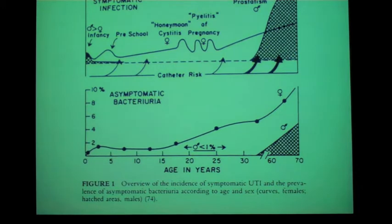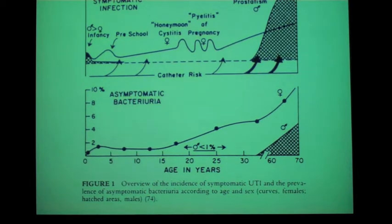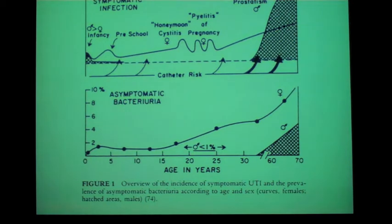You can map the risk of UTI over one's lifetime. Early in life, boys have more UTIs than girls, but they're high in both genders. Then it becomes predominantly a problem for females. Girls in preschool have a little blip in UTIs. When young women become sexually active, there's an increase in cystitis. During pregnancy, UTIs are a big problem. As people grow older, UTIs become a problem in males as well, correlating with the development of prostate disease.